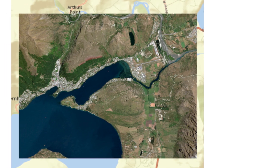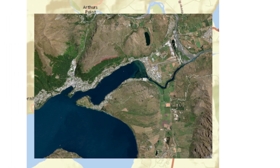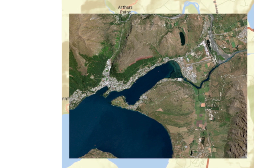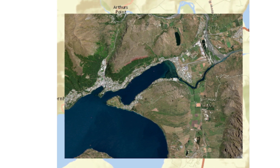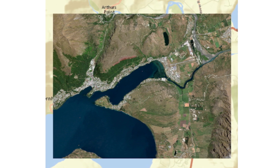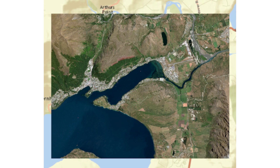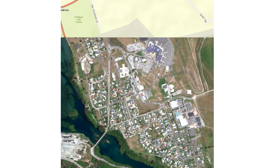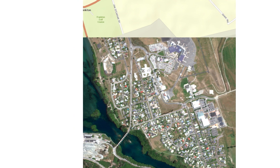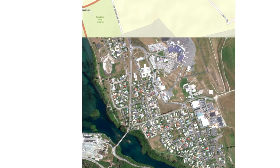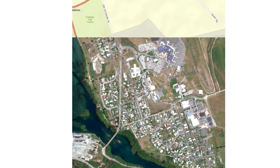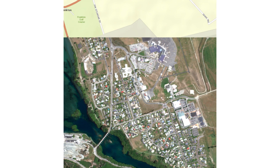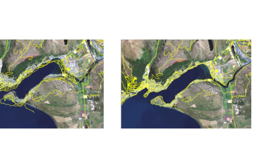The alternative is orthorectification, which is used when the satellite image already has spatial information and the analysis requires highly accurate measurements from the image. The ArcGIS orthorectification tools require the following inputs: detailed terrain, a camera model, and accurate sensor location.